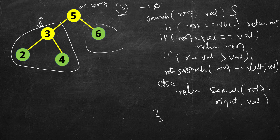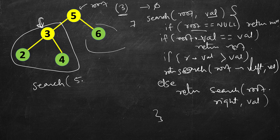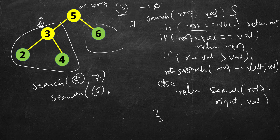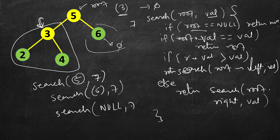It will call search on the next node, check if root is null, then check if its value matches. For searching 3, it will match and return the pointer. For searching 7: starting at 5, it's not equal, so we call search on the right. We reach 6, which is not equal to 7 and is smaller, so we call on its right — but its right is null, so search(null, 7) returns null, meaning we did not find 7.